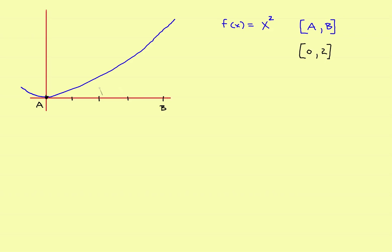So a will be equal to 0, b will be equal to 2, so we're going to go from 0 to 2. Now what the midpoint formula is all about — let's take a look at what inscribed and circumscribed rectangles look like first of all. In this case we will divide it up into 4 intervals, so we will let n be equal to 4 rectangles.